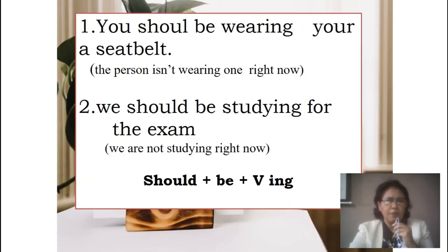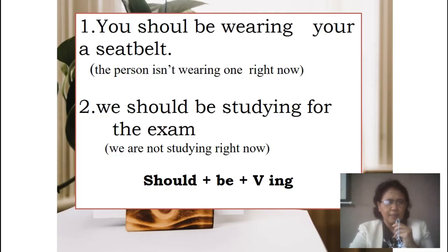For example: 'You should be wearing your seatbelt' and 'We should be studying for the exam.' These follow the pattern: should + be + verb-ing (continuous). 'You should be wearing your seatbelt' means the person is not wearing one right now. 'We should be studying for the exam' means we are not studying right now.